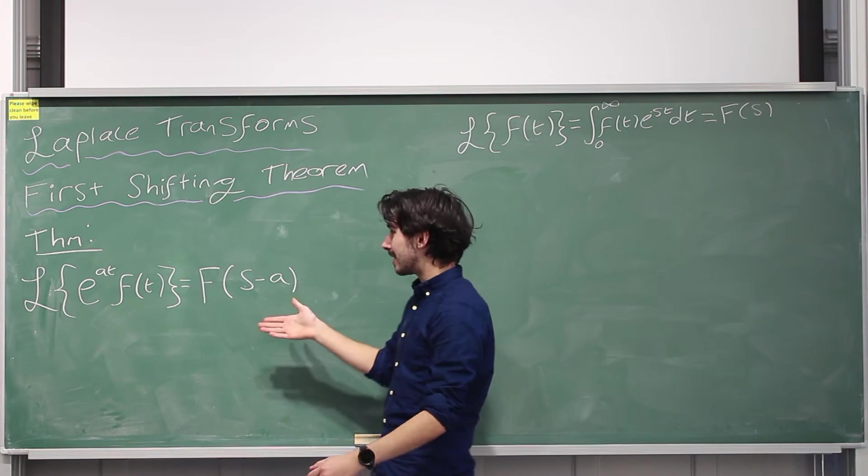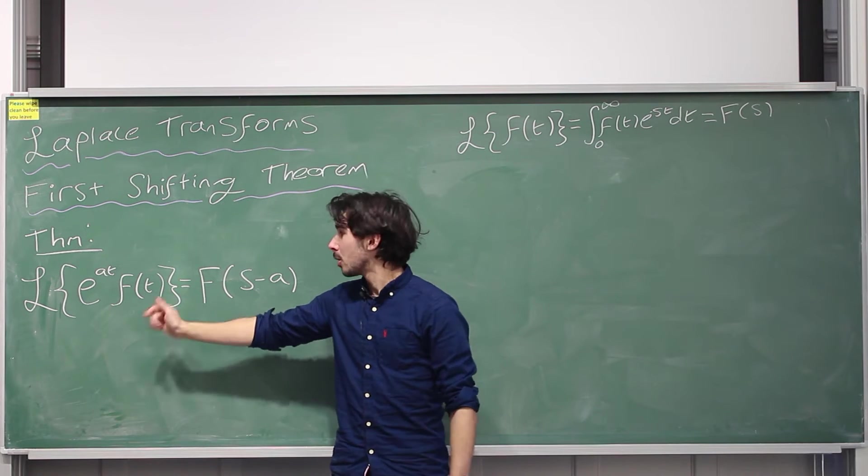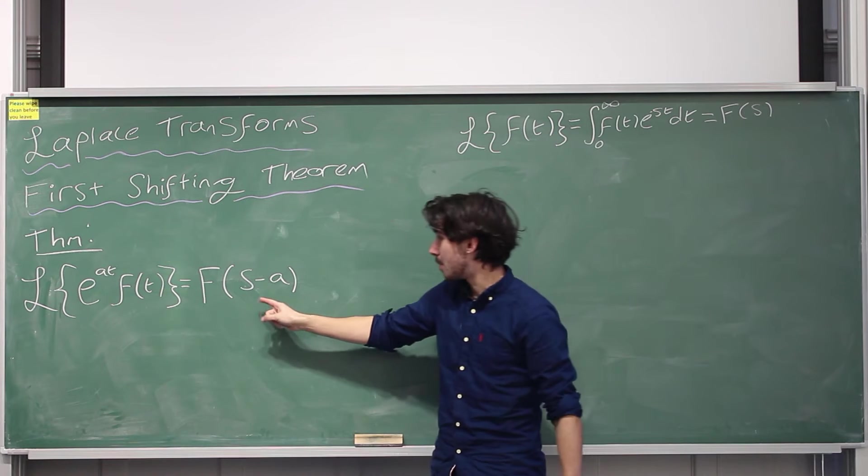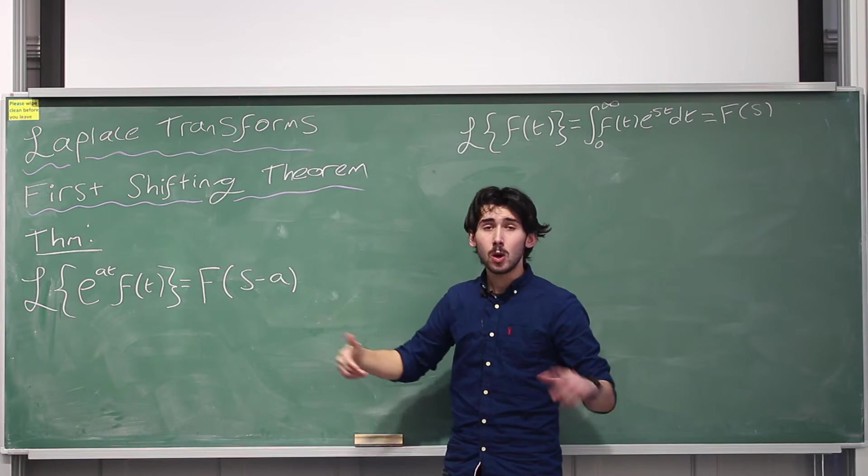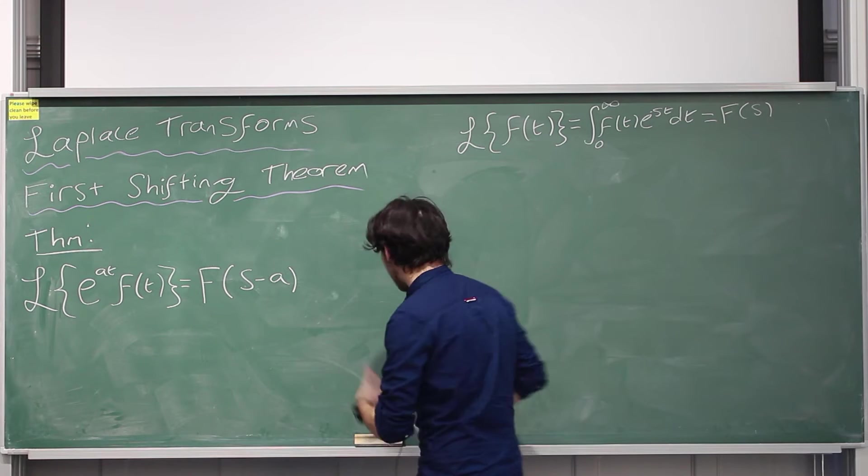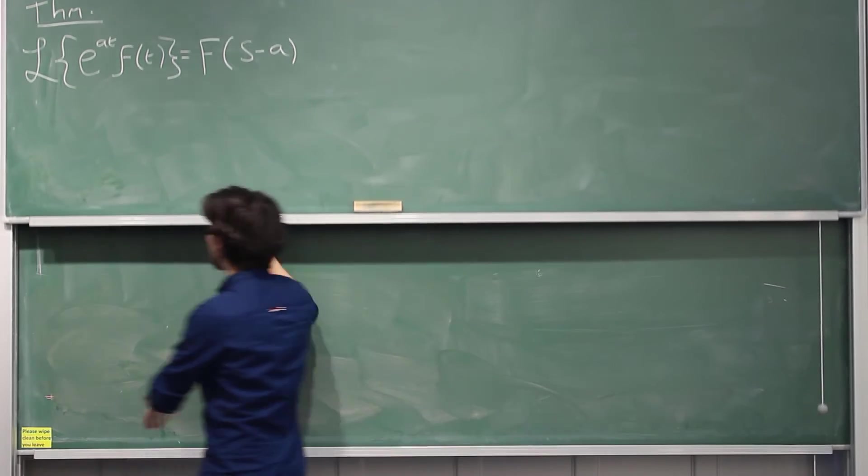What it means though is that you can very easily take Laplace transforms of this form because you can ignore this term, work out this Laplace transform and then just move it by a and then you're done. We'll do an example at the end of the video but I want to prove it to you guys first and it's actually really easy to prove, you'll see how easy it is.